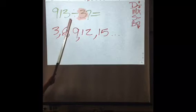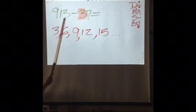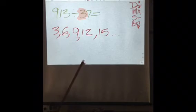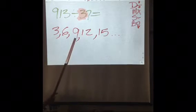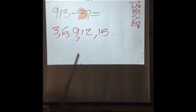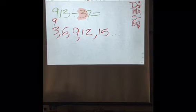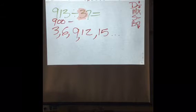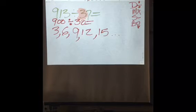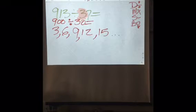So we're going to say, now this 3 will go into what number is going to be closest to this that it can go into evenly, and we're going to say what goes into the 9. So what we want to do is we're going to rewrite our problem with 900 and we're going to divide it by 30, and that will give us our answer.